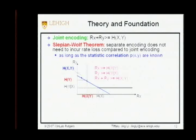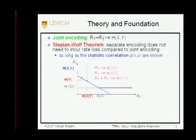If we have a joint encoder at the source, the combined rate is simply the joint entropy. The Slepian-Wolf theorem says that even with separate encoding and no communication between sources, it's possible to achieve this joint entropy bound. Above the blue line, everything is achievable. With Slepian-Wolf coding, certain parts of this region are still achievable. The combined rate is lower-bounded by the joint entropy, and each individual rate is limited by the conditional entropy — but it can be as efficient as joint compression.